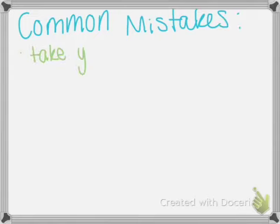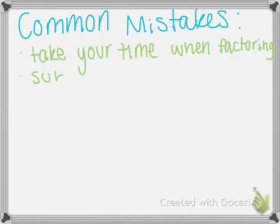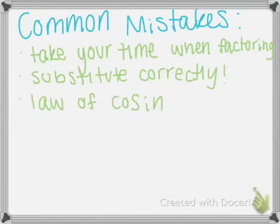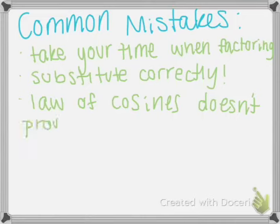Some common mistakes: you really need to take your time when you factor, you need to substitute correctly, and the Law of Cosines doesn't prove the Pythagorean theorem.